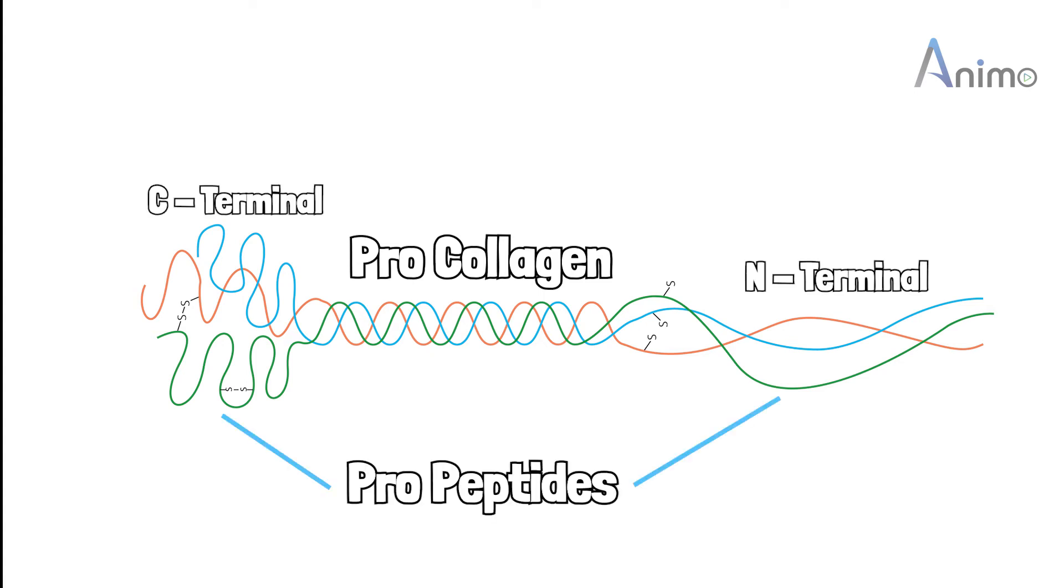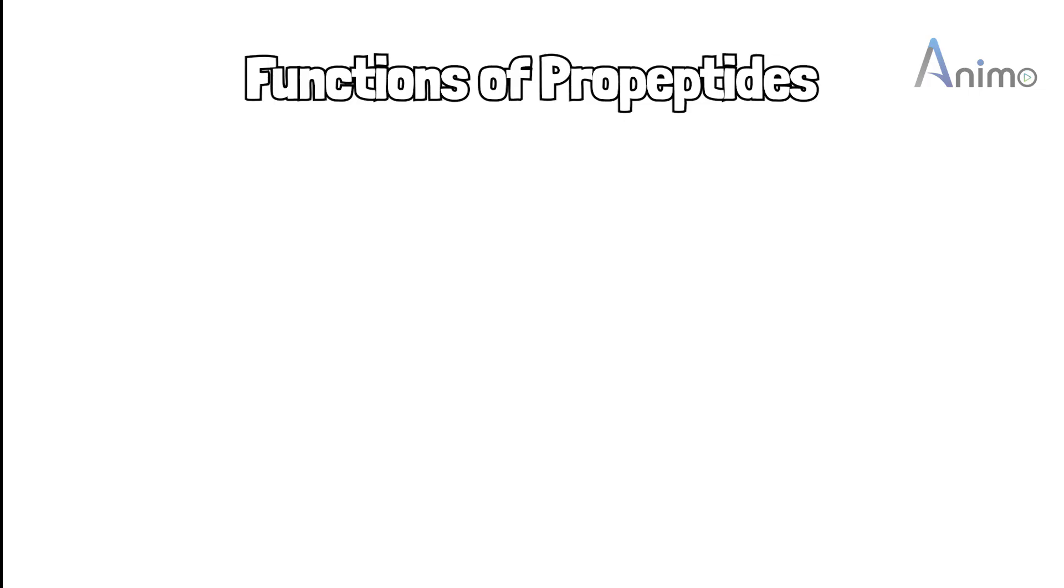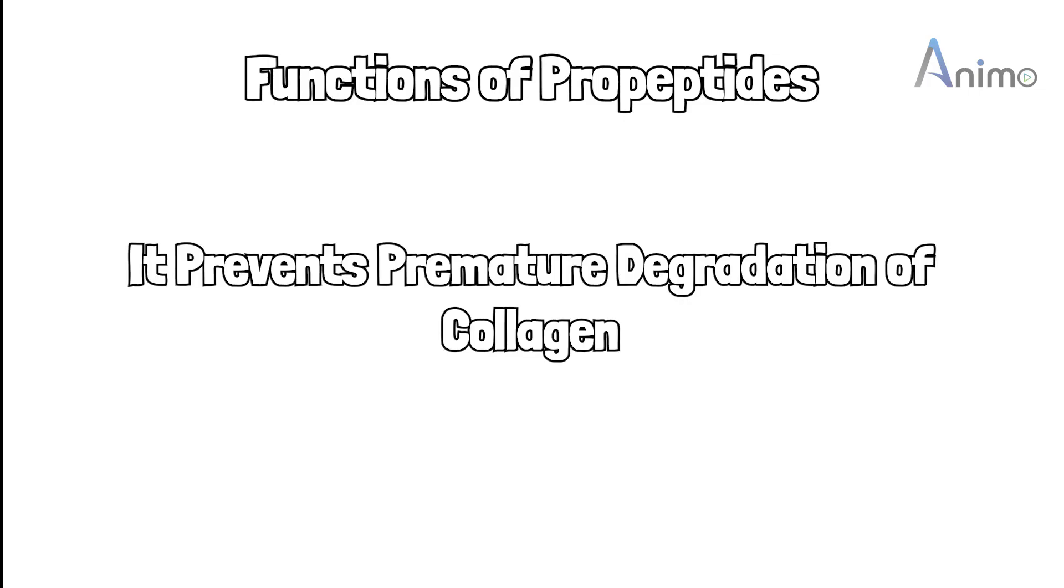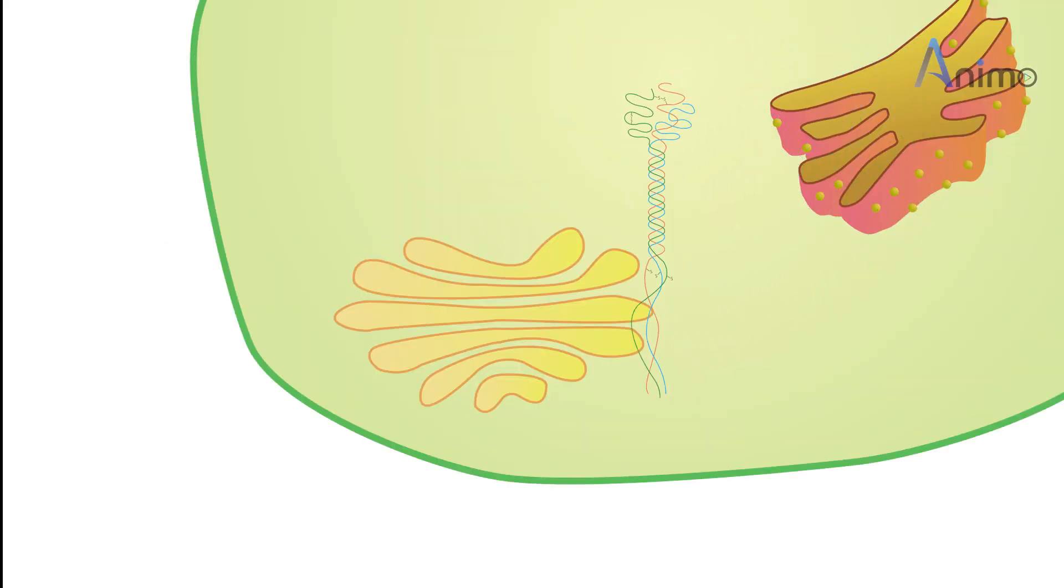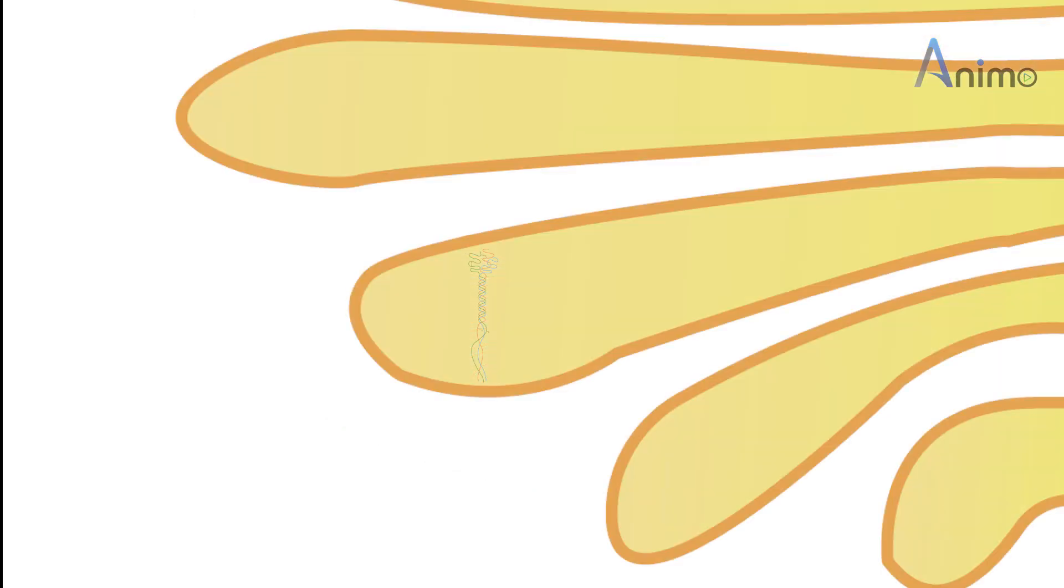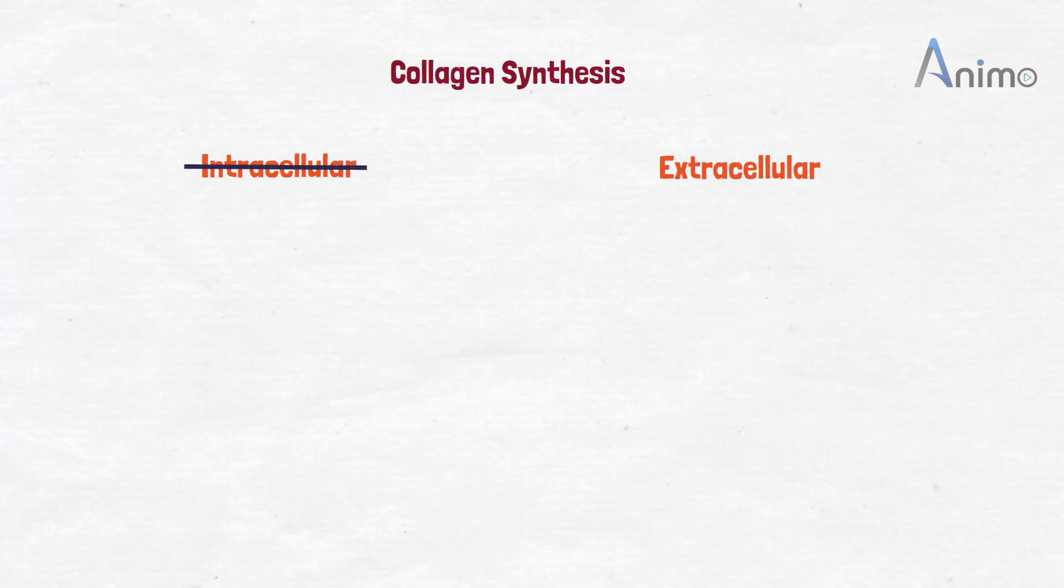Now, what is the importance of this? It is also not mentioned in our textbooks, but after some research, we found that it prevents premature degradation of pro-collagen. This pro-collagen now goes to the Golgi apparatus and is ready for leaving the cell. So here ends our intracellular collagen synthesis.